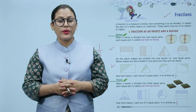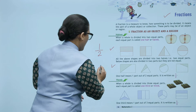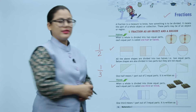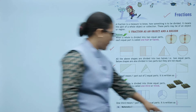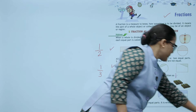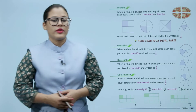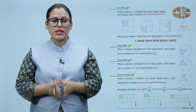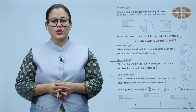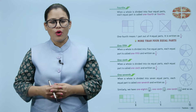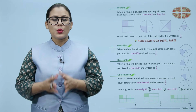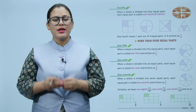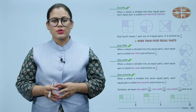One fourth means one part out of four equal parts; it is written as one by four. If a whole is divided into four equal parts, each equal part is called one-fourth. One-fourth means one part out of four equal parts, written as one by four.